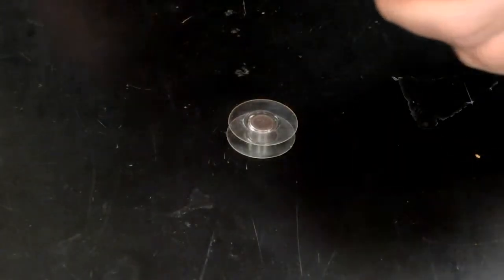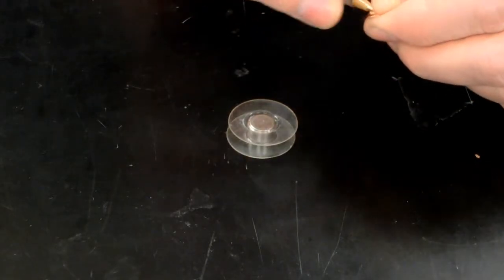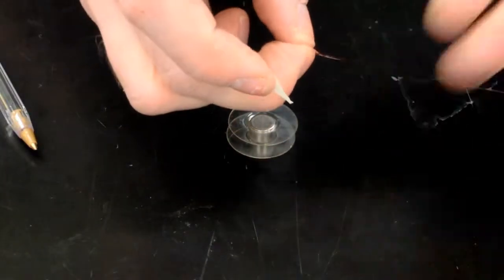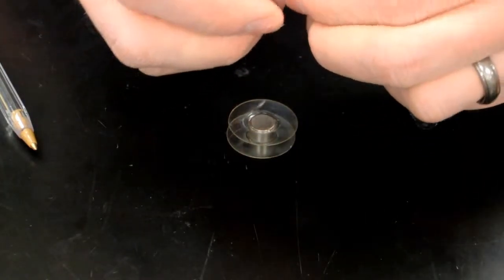Next, you're going to want to take about a foot of that 42 gauge winding wire and wrap it around the tip of a pencil or a pen into a nice little coil that you can tape to one side of your pickup bobbin.